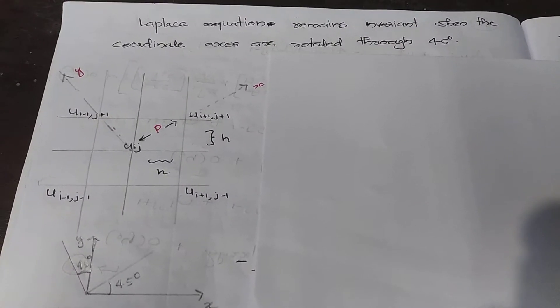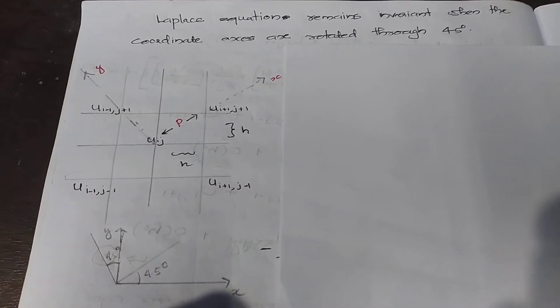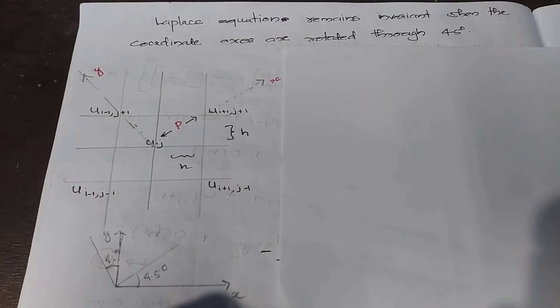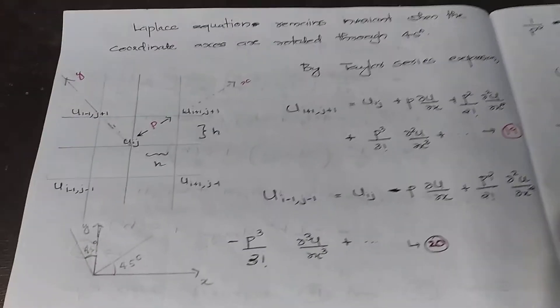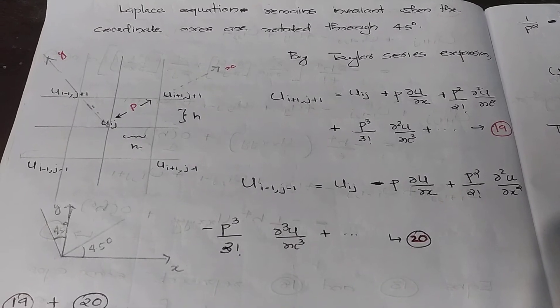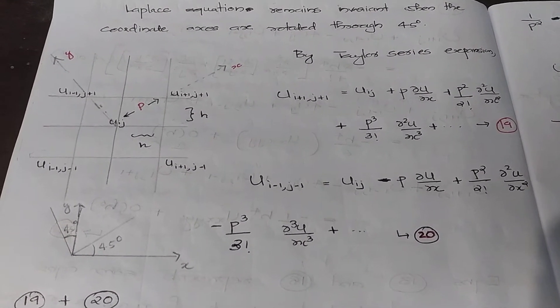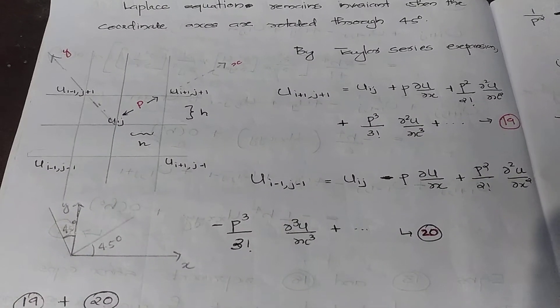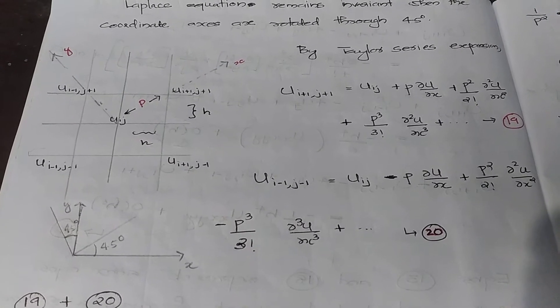We know that the Laplace equation is invariant when the coordinate axes are rotated to 45 degrees. With the coordinates rotated, we consider the distance p between u(i,j) and u(i+1,j+1). By Taylor series expansion, u(i+1,j+1) equals u(i,j) + p·∂u/∂x + (p²/2!)·∂²u/∂x² + (p³/3!)·∂³u/∂x³, which is equation number 19.